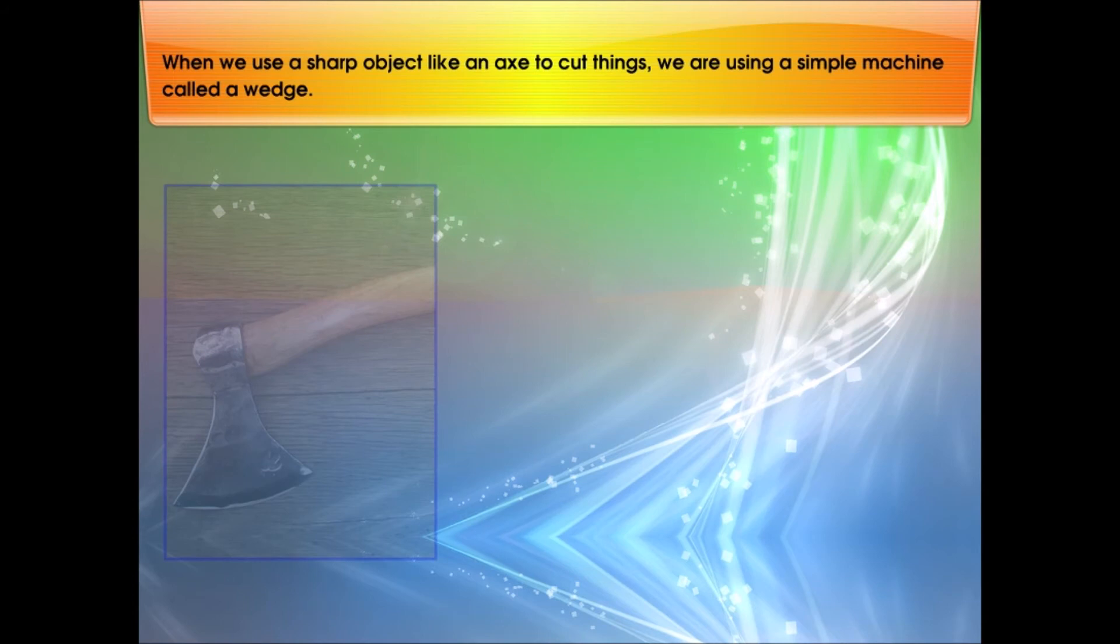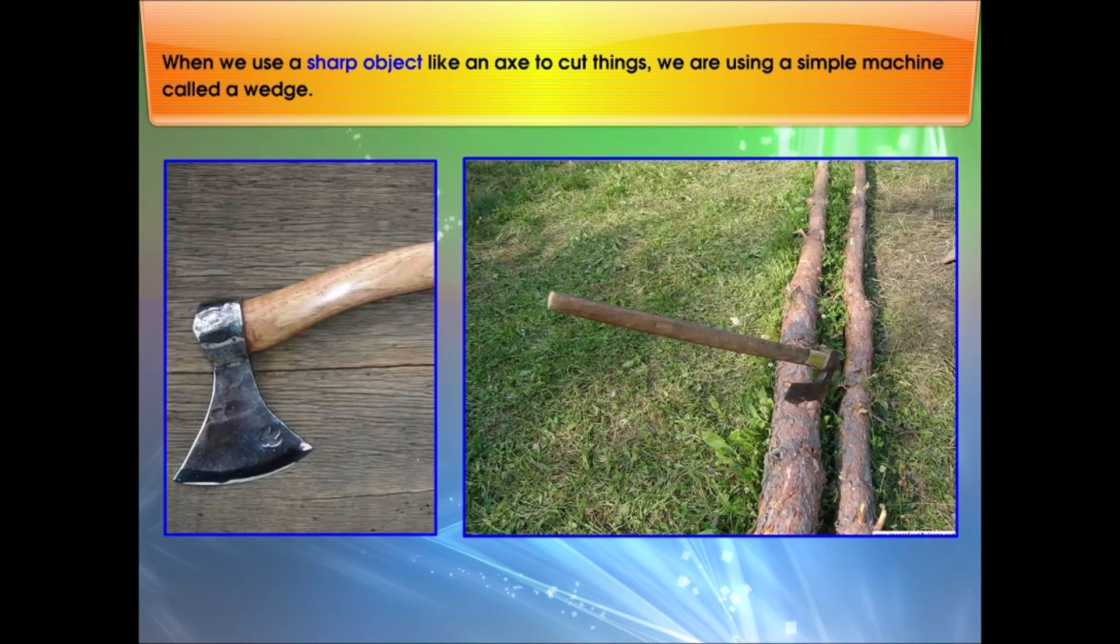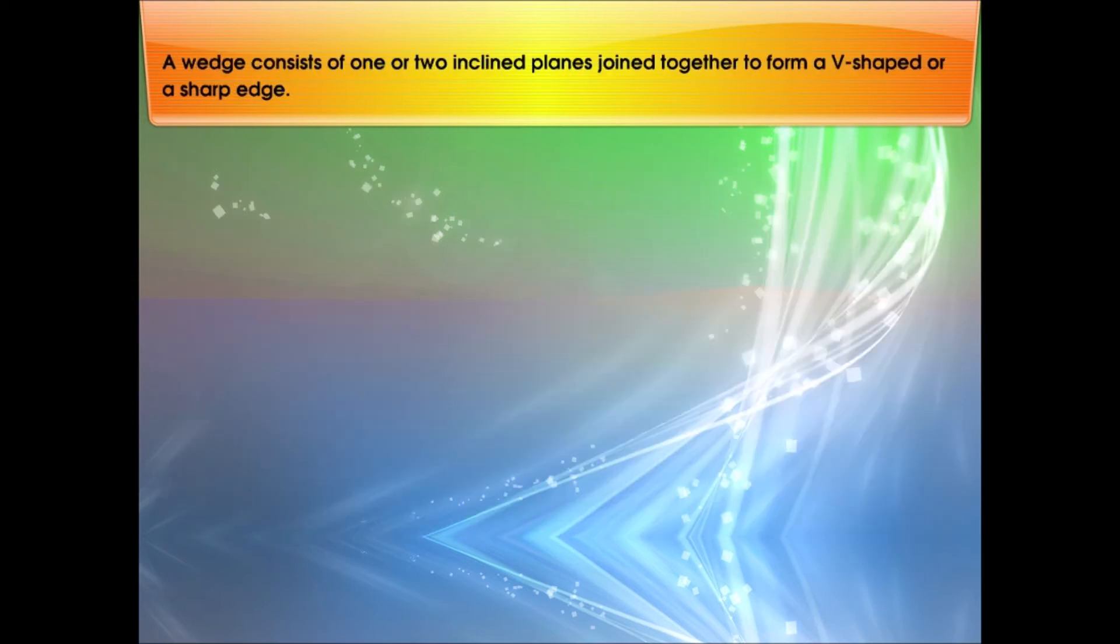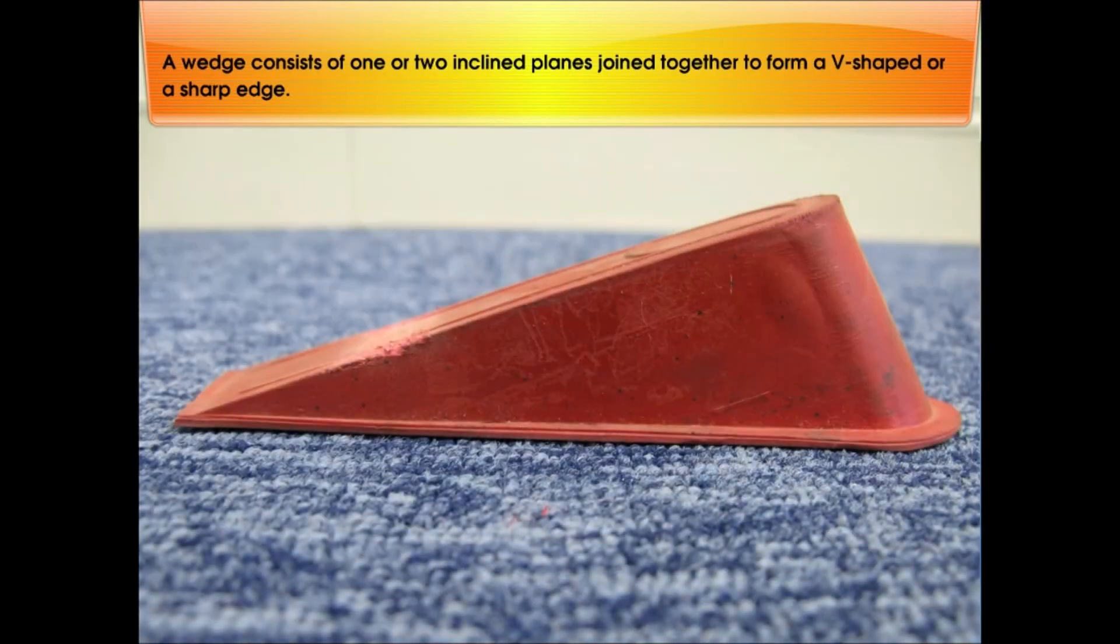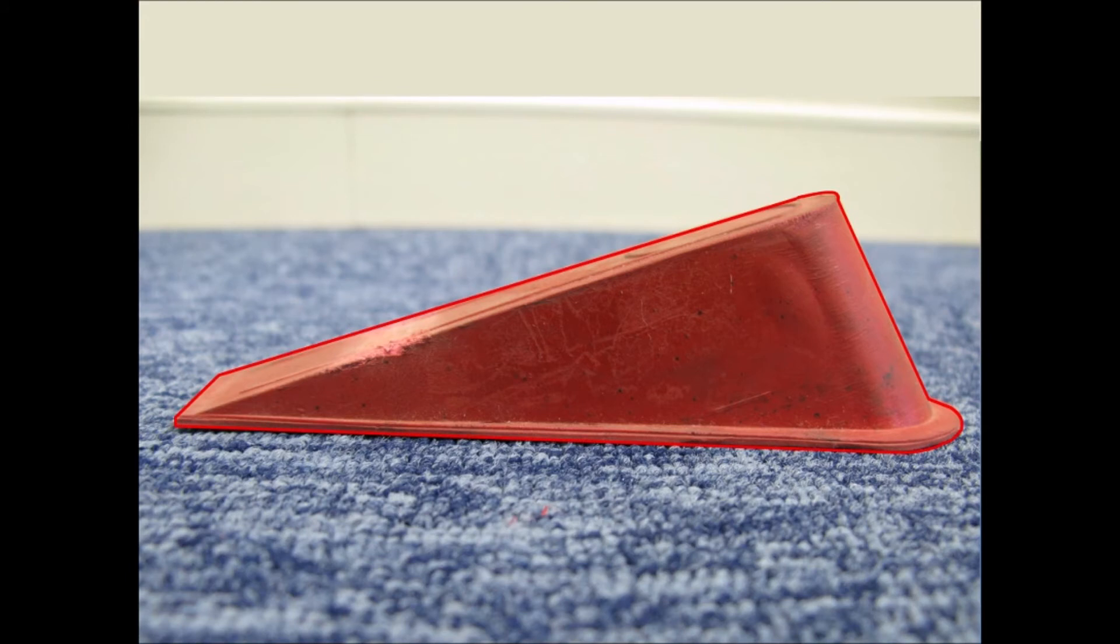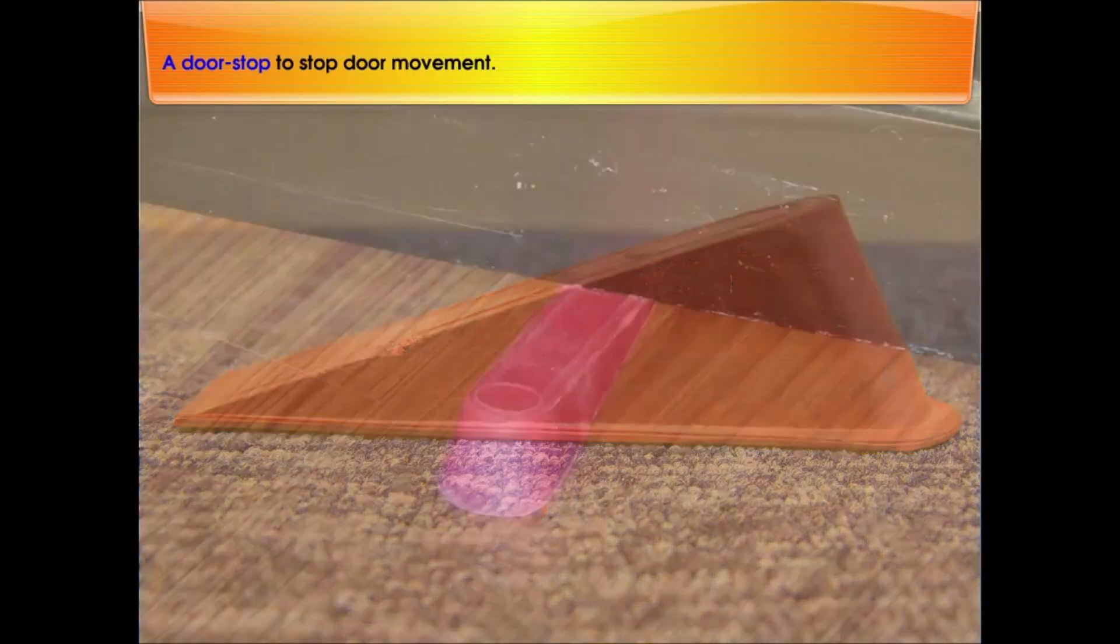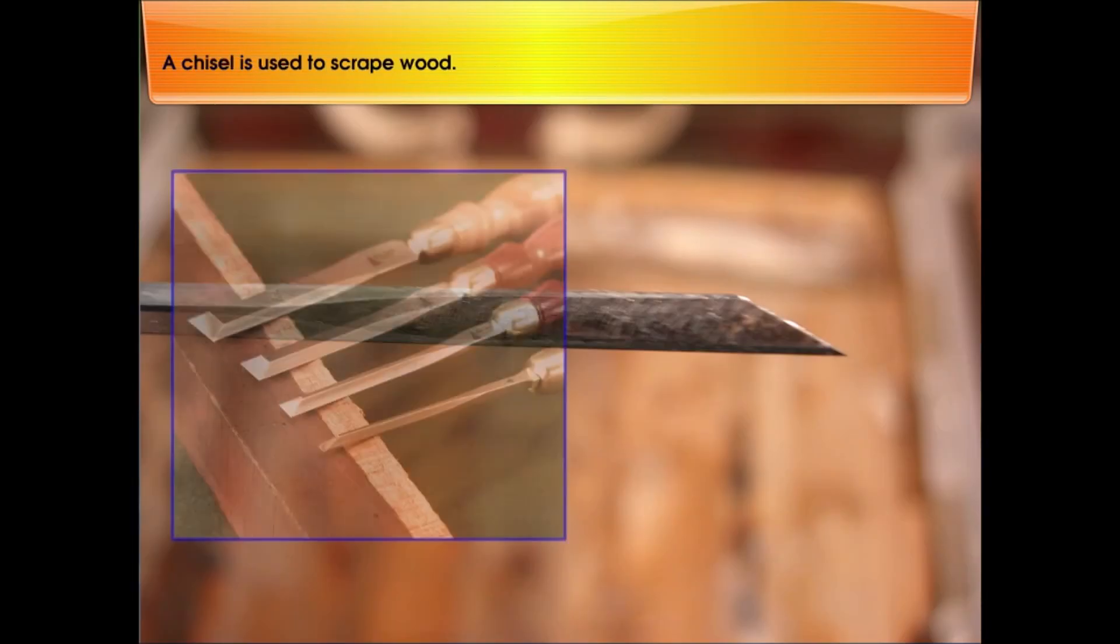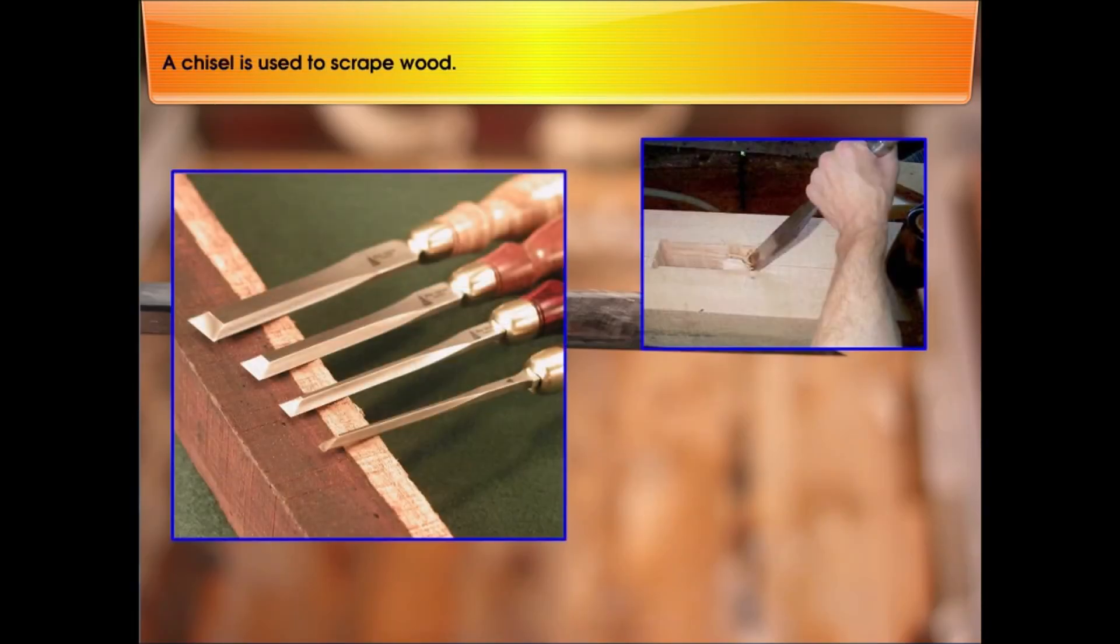When we use a sharp object like an axe to cut things, we are using a simple machine called a wedge. A wedge consists of one or two inclined planes joined together to form a V-shaped or sharp edge. A wedge is used in a door stop to stop door movement. A chisel is used to scrape wood.